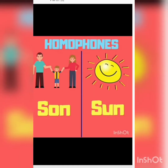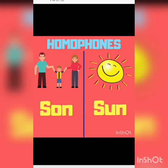Let us look at some homophones. The first one is 'son' and 'sun'. S-O-N, son, means a baby boy or child. And S-U-N, sun, means the one we see in the sky at daytime.